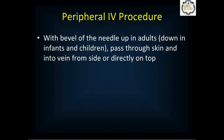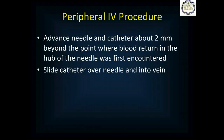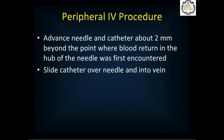Once you've cleaned the area over the vein, don't touch it again or you'll need to re-clean. Use your hand to stabilize the patient's arm and place your thumb distal to where you'll insert the catheter, applying traction distally to stabilize the vein and keep it from rolling. Your IV catheter has a bevel — in adults keep the bevel up, in infants and children keep it down. Pass the needle at about a 30-degree angle through the skin and into the vein, either from the side or directly on top. You'll feel it pop as you enter the vein.